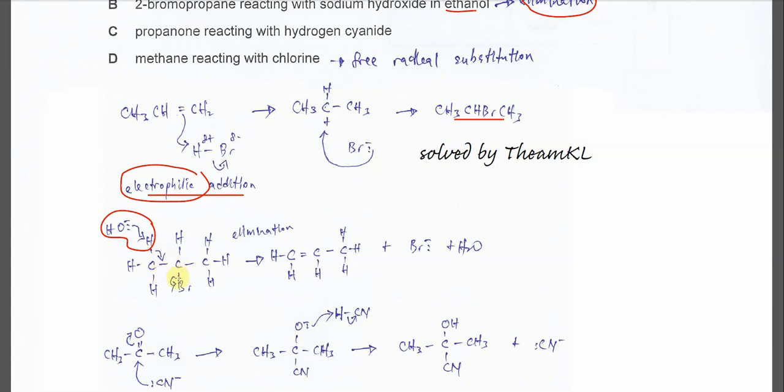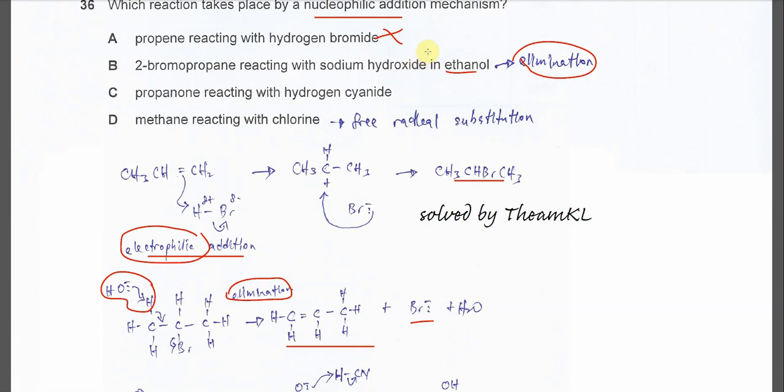And this C-Br bond will break. And this pair of electrons will move to the bromine to form bromide. So therefore, at the end it will form propene, bromide and H2O. So this reaction we call elimination. So it's not addition. So therefore, B not the answer.